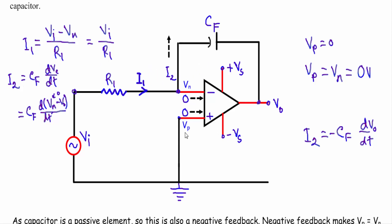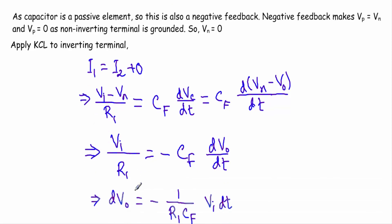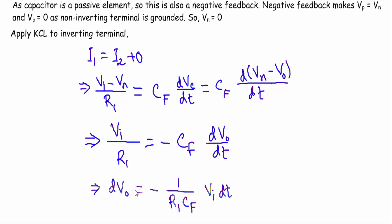Applying Kirchhoff's current law at the inverting terminal: I1 equals I2 plus zero. Substituting the values of I1 and I2, we get VI divided by R1 equals minus CF times dVO/dt. Our final task is to find the output voltage VO, so we keep dVO on one side and all other terms on the right side.